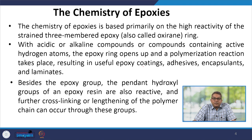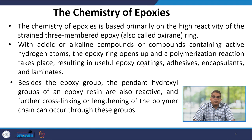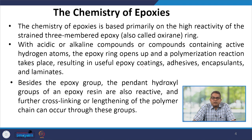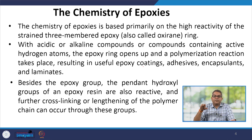The chemistry of Epoxies is based primarily on the high reactivity of the strained 3-membered Epoxies, called the Oxirane rings. With acidic or alkaline compounds, or compounds containing active hydrogen atom, the epoxy ring opens up and polymerization reaction takes place. This results in useful epoxy coatings, adhesives, encapsulants and laminates.